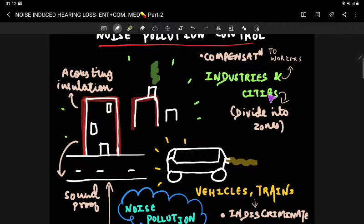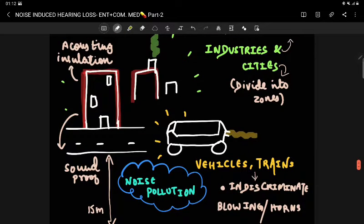Persons who are working in industries are to be given compensation by proper legislation like the Factories Act. Next, industries are the ones going to produce sound, so what we can do is acoustic insulation of these buildings and improve the soundproofing to reduce noise pollution.